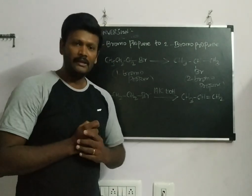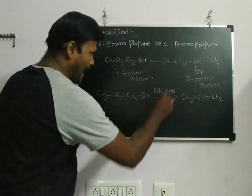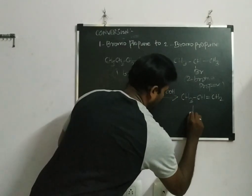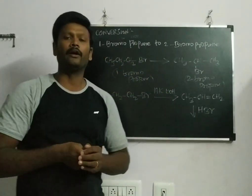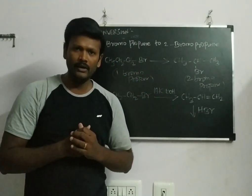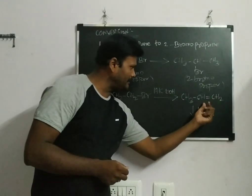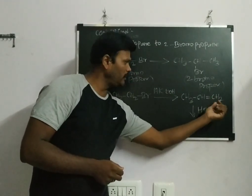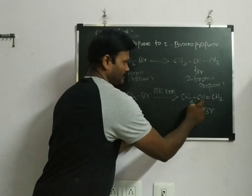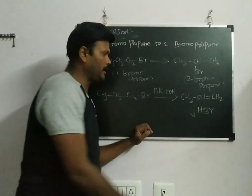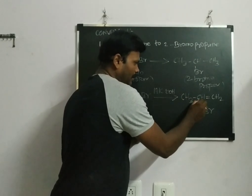The second step: addition of HBr. According to Markovnikov rule, what is the Markovnikov rule? Suppose if I am having a double bond, in which of these two carbons is the lower number of hydrogen present? This carbon will have less number of hydrogen.